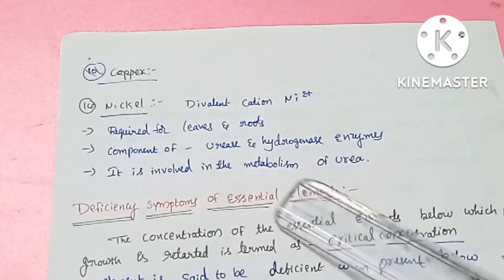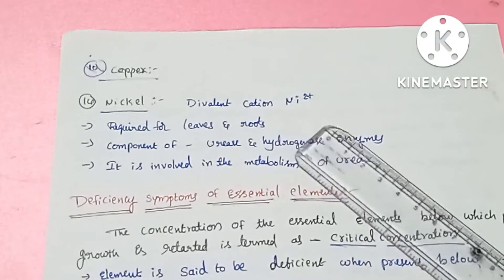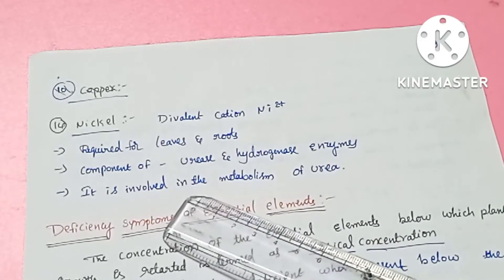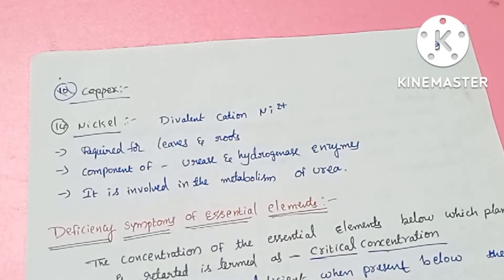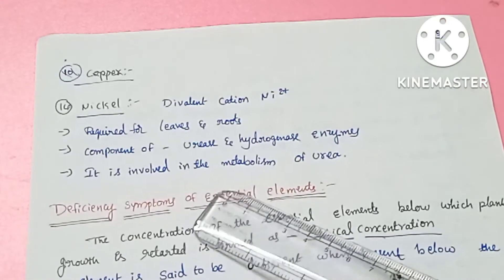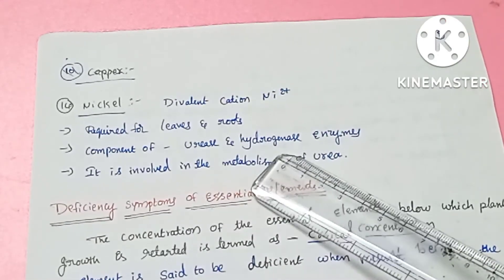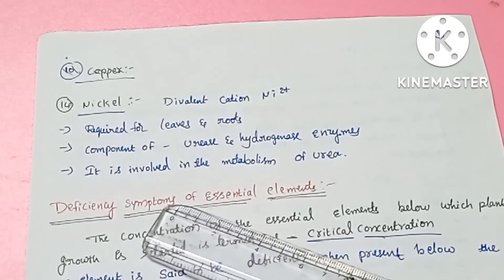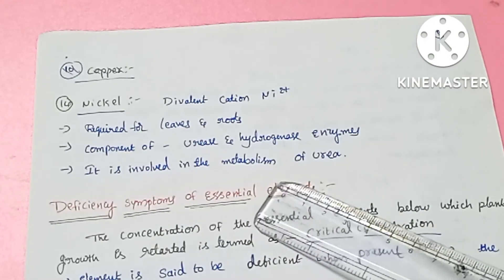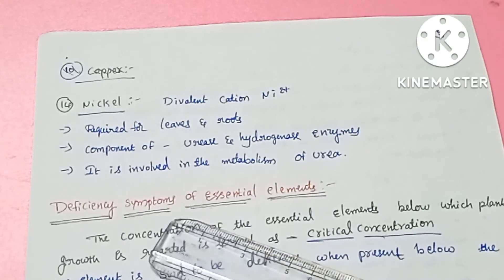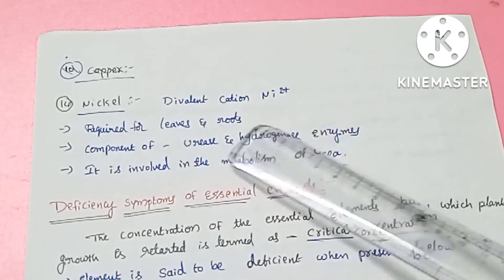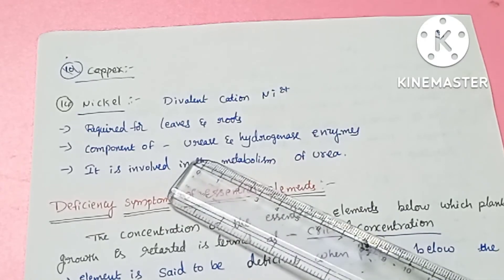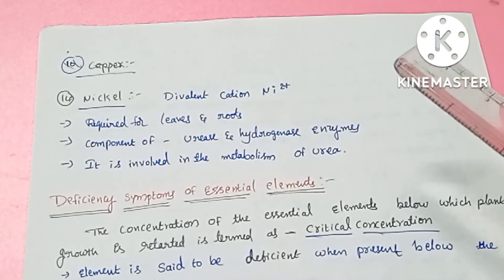The last element is nickel, absorbed in the form of nickel ions, required in leaves and roots. Nickel is a component of the enzymes urease and hydrogenase and is involved in urea metabolism.